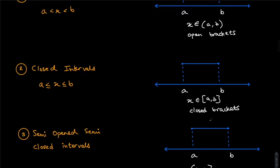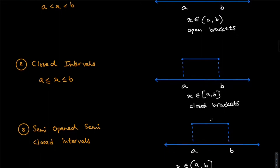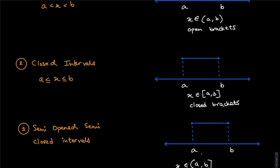Just be aware of that notation — you may be required to write it as the final answer. Finally, we have the semi-open and semi-closed interval, where one bracket is a parenthesis and one is a square bracket. You have to see what the condition says and based on that write the range of values that x can take.